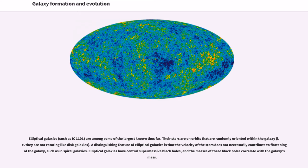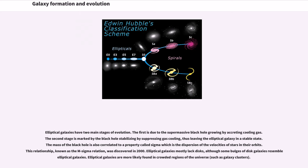Elliptical galaxies have two main stages of evolution. The first is due to the supermassive black hole growing by accreting cooling gas. The second stage is marked by the black hole stabilizing by suppressing gas cooling, thus leaving the elliptical galaxy in a stable state. The mass of the black hole is also correlated to a property called sigma, which is the dispersion of the velocities of stars in their orbits. This relationship, known as the M-sigma relation, was discovered in 2000.